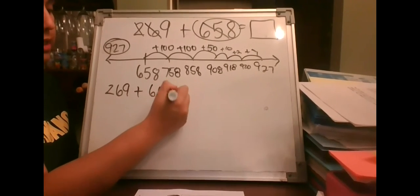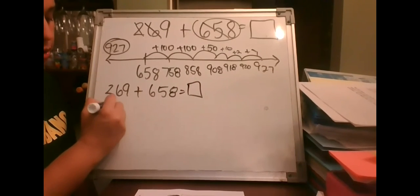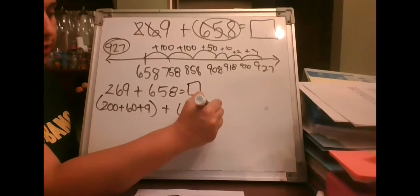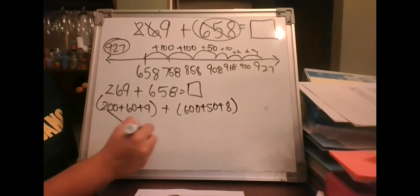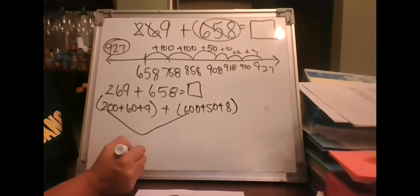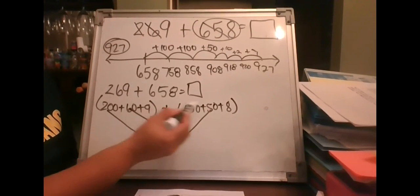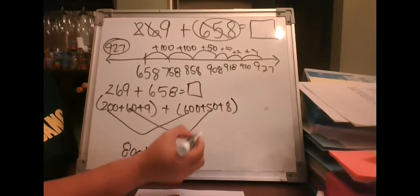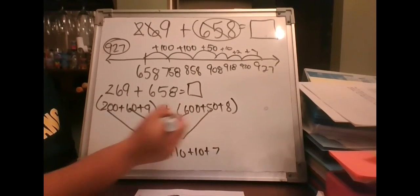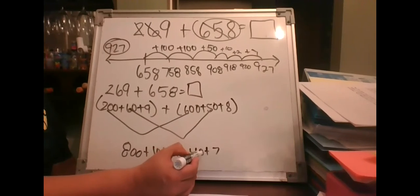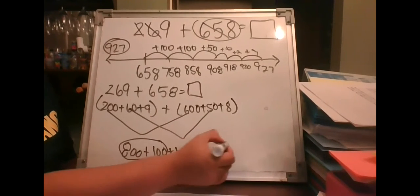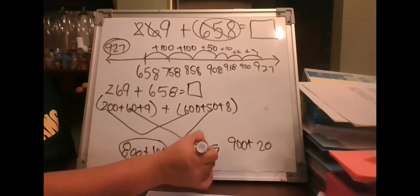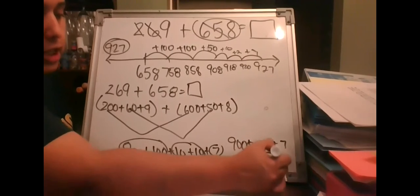Using expanded form: 269 is 200 plus 60 plus 9, and 658 is 600 plus 50 plus 8. Add hundreds to get 800. Add tens: 60 plus 50 is 110, so carry 100 and have 10 left. Add ones: 9 plus 8 is 17, so carry 10 and have 7 left. Total hundreds are 900, tens are 20, ones are 7, giving 927.